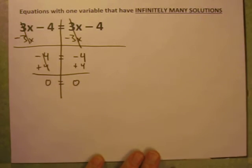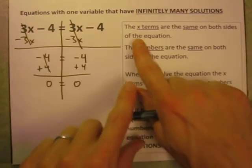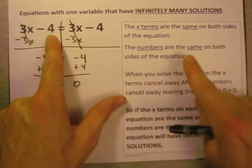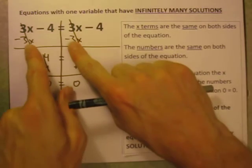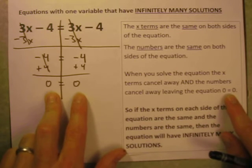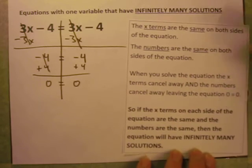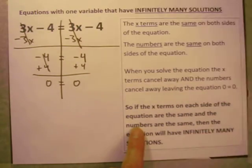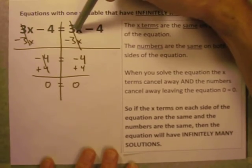Let's look at this a little more — why is that? Looking back at the original equation, a couple things I notice right away: the X terms are the same on both sides, 3X and 3X, and the numbers are the same on both sides, negative 4 and negative 4. When you solve this equation, the X terms cancel out leaving just the numbers, and then the numbers can even cancel away, leaving just 0 equals 0, which is always true. It boils down to this: if the X terms on each side are the same and the numbers are the same, the equation will have infinitely many solutions. Pick any number you want, put it in for X, this equation will be true.